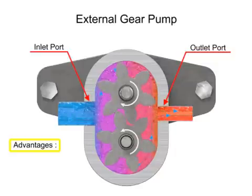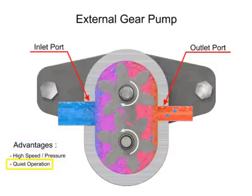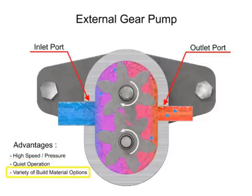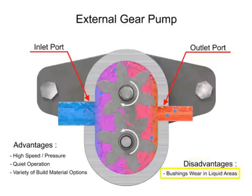The advantages of external gear pumps are their high speed and pressure, relatively quiet operation, and that their design accommodates a wide variety of materials. Disadvantages include bushings in the liquid area can become worn and that they have fixed end clearances.